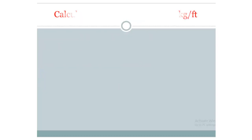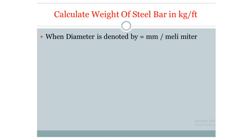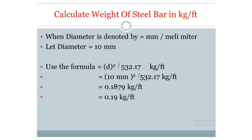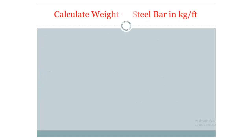Again, calculate weight of a steel bar in kg per feet when diameter is in millimeters. Let diameter equal 10 mm. Use the formula: D squared divided by 532.17, kg per feet. Input D equals 10 mm: 10 squared divided by 532.17. The result is 0.1879, approximately 0.19 kg per feet.